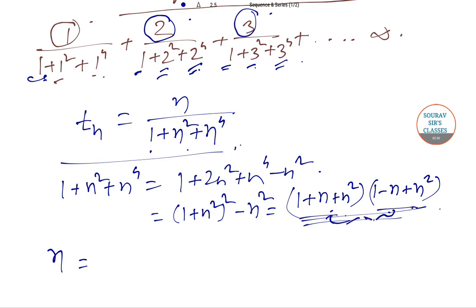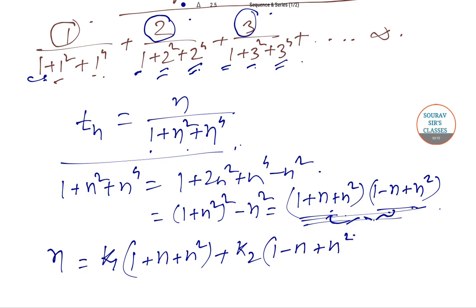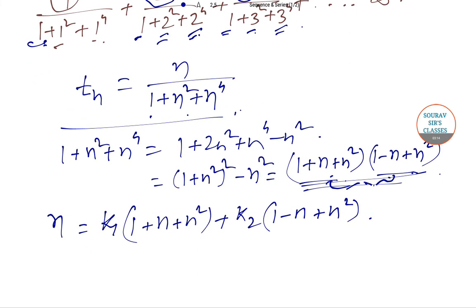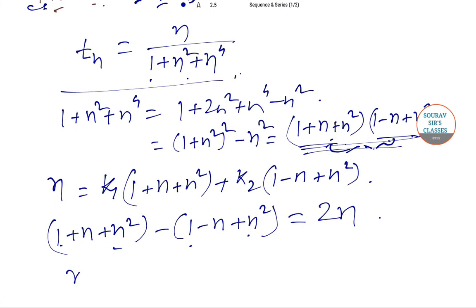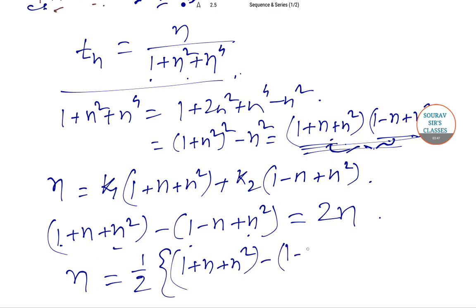We can write n as k₁(1+n+n²) + k₂(1−n+n²). Notice that (1+n+n²) − (1−n+n²) = 2n, since the 1s and n² terms cancel. Therefore n = ½[(1+n+n²) − (1−n+n²)].